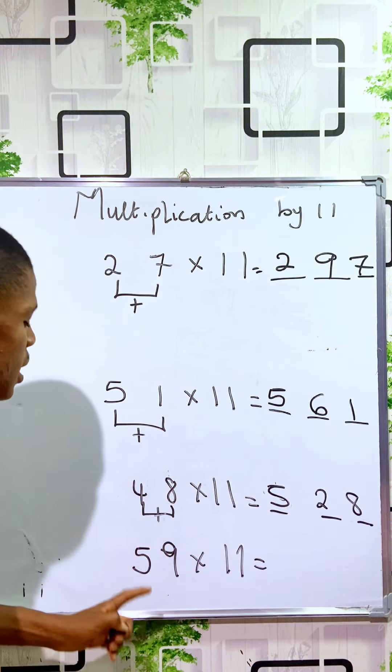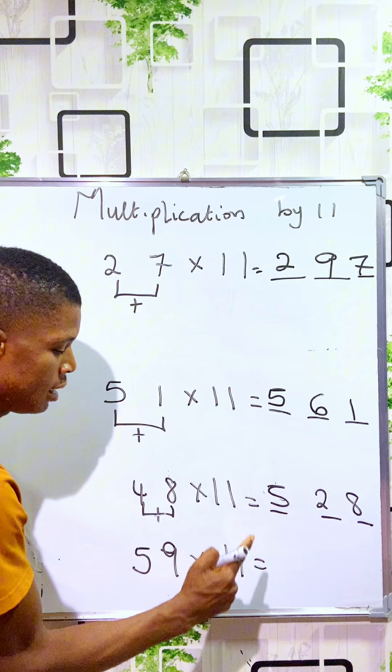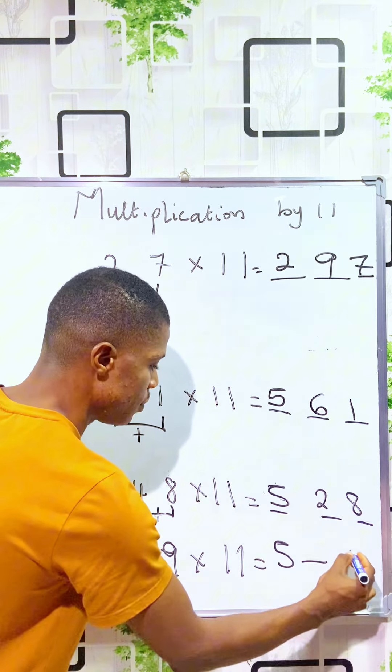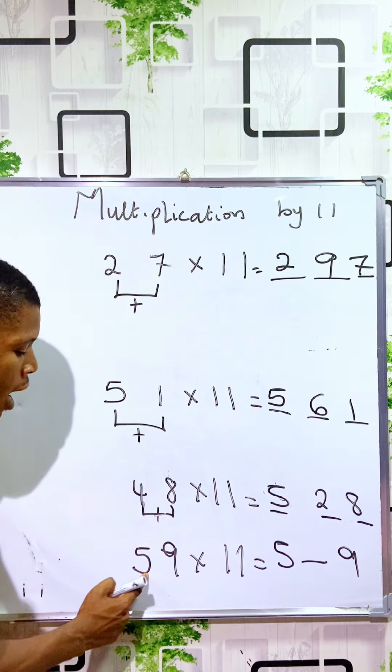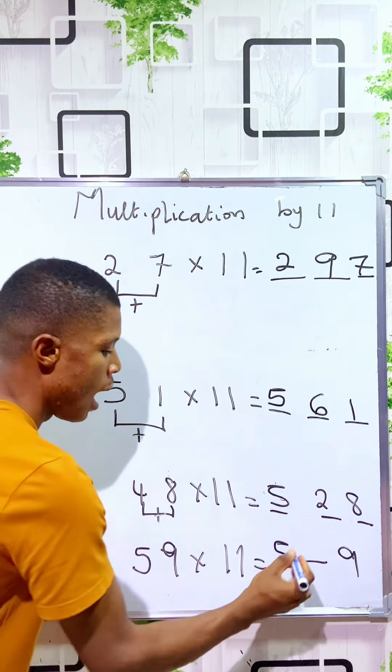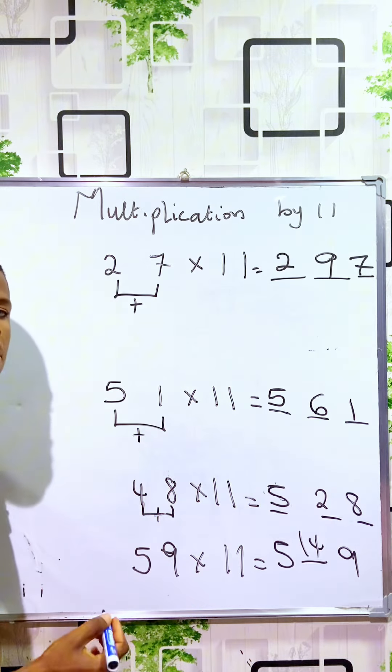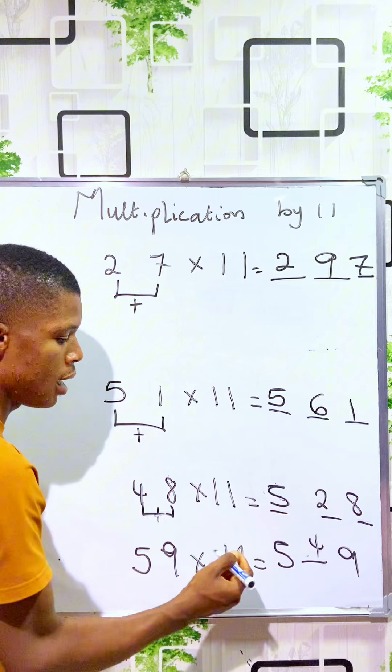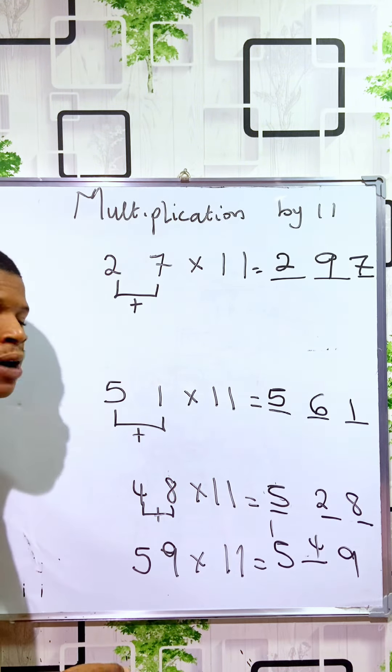For this one, 59 times 11, you just write 5, create a space, write 9. When you add 5 to 9, you get 14. Are you going to write 14 here? No, you write the unit, which is 4, and carry the tenth, add it to the next place value.